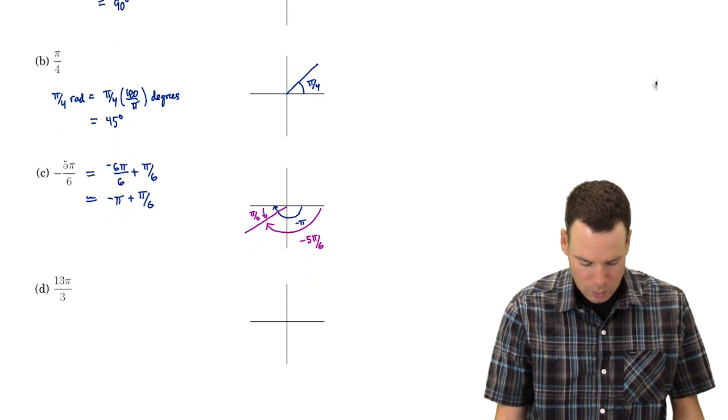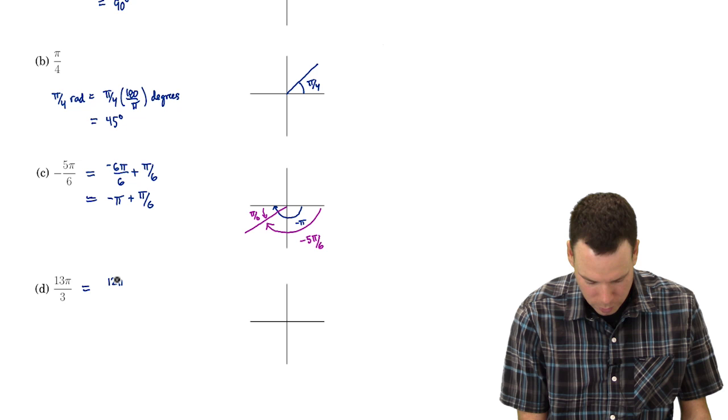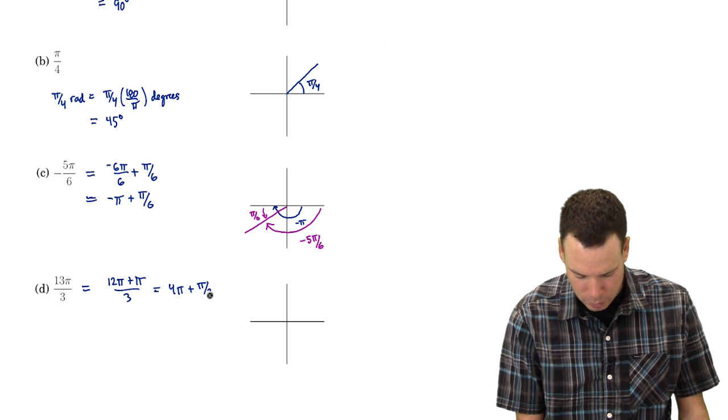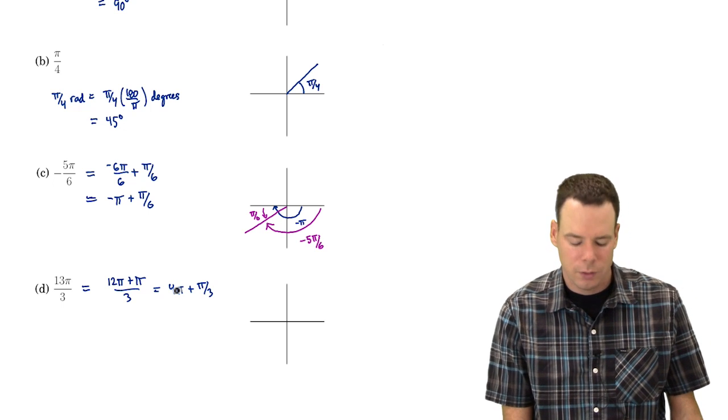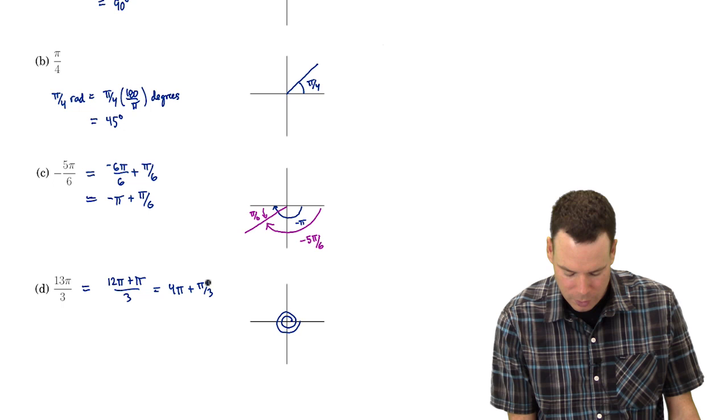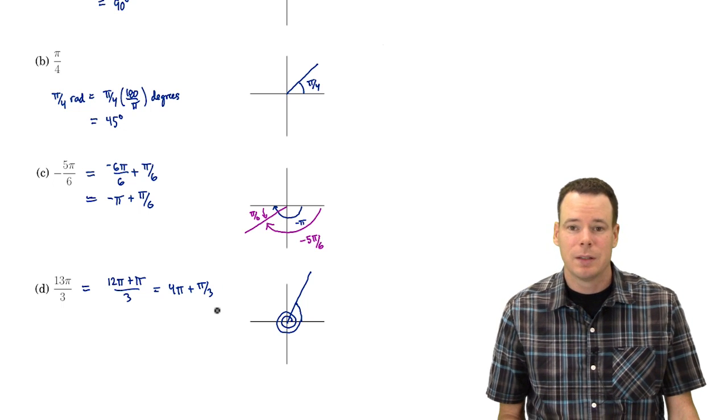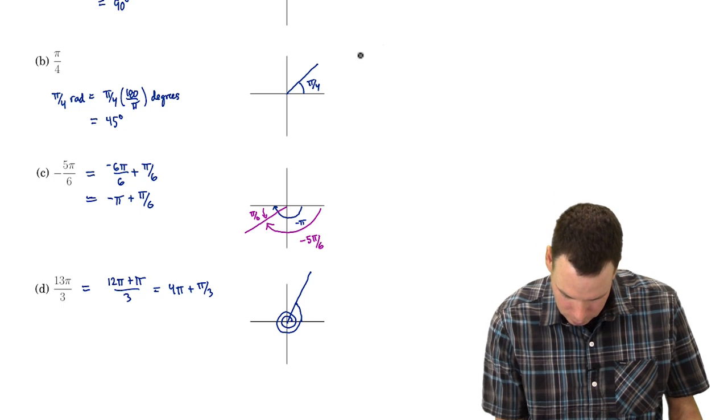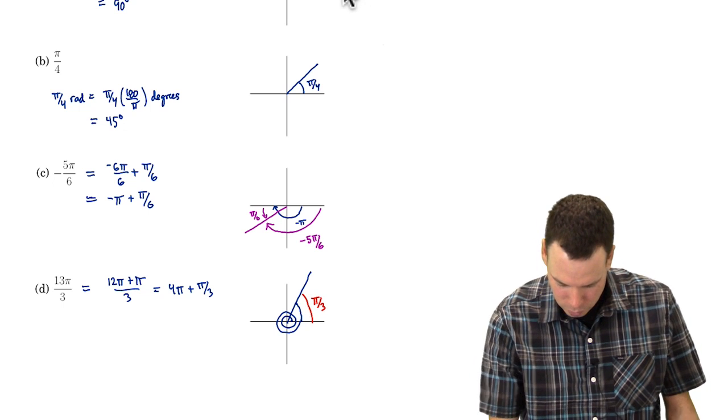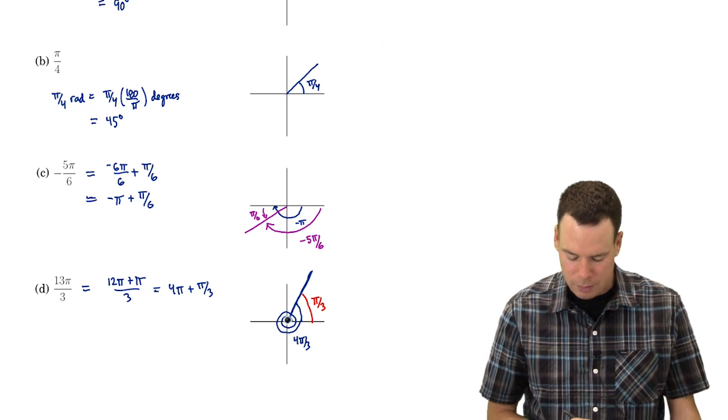And our last example, 13π/3. Well, 13π/3, think of it as 12π plus π over 3, or it's 4π plus π/3. What's 4π? Well, 2π is a full rotation, so this is 2 rotations. So that's 2π, 4π. And then we go up another π/3. So that's up to here. What's π/3? That's 60 degrees. So we go up another 60 degrees. So this was π/3. And this blue one here is 4π/3. And so there's our terminal line segment marking the end of the angle.